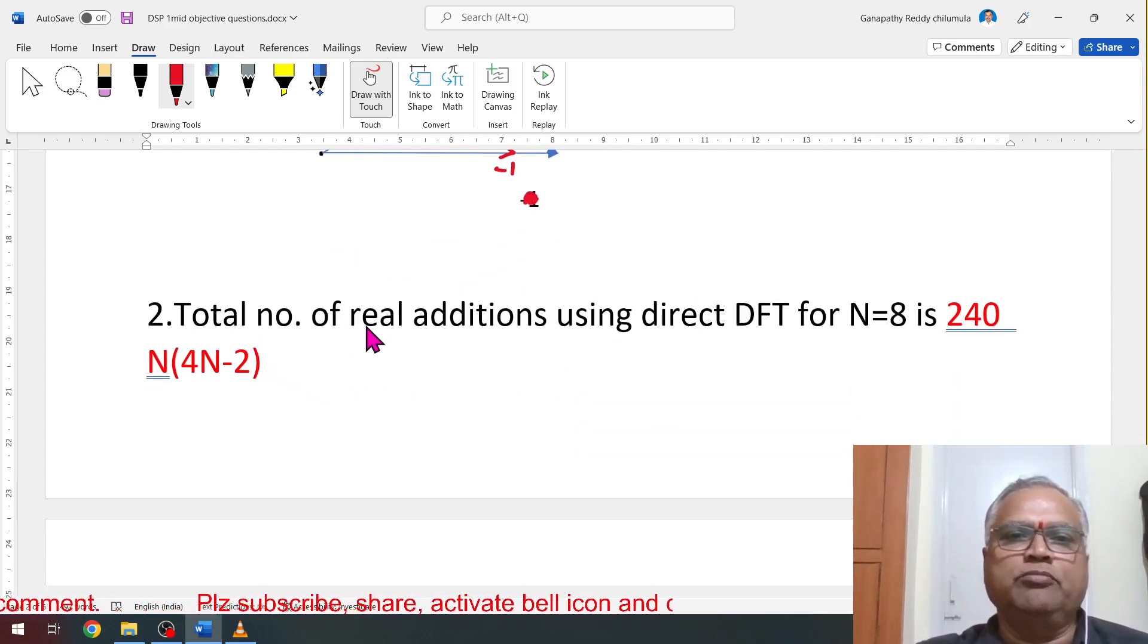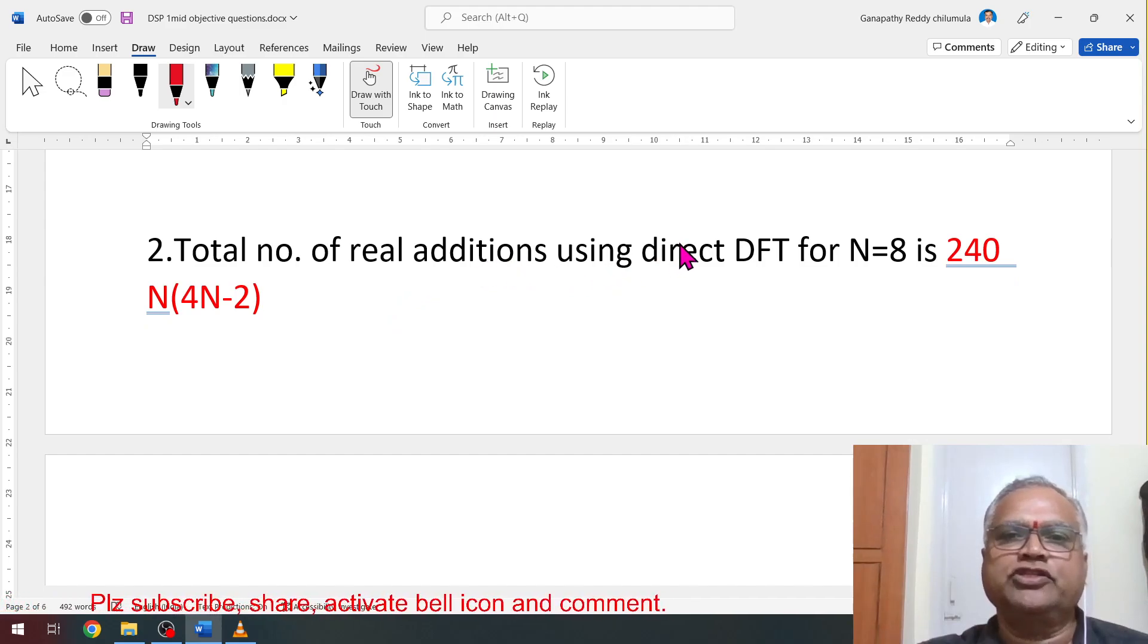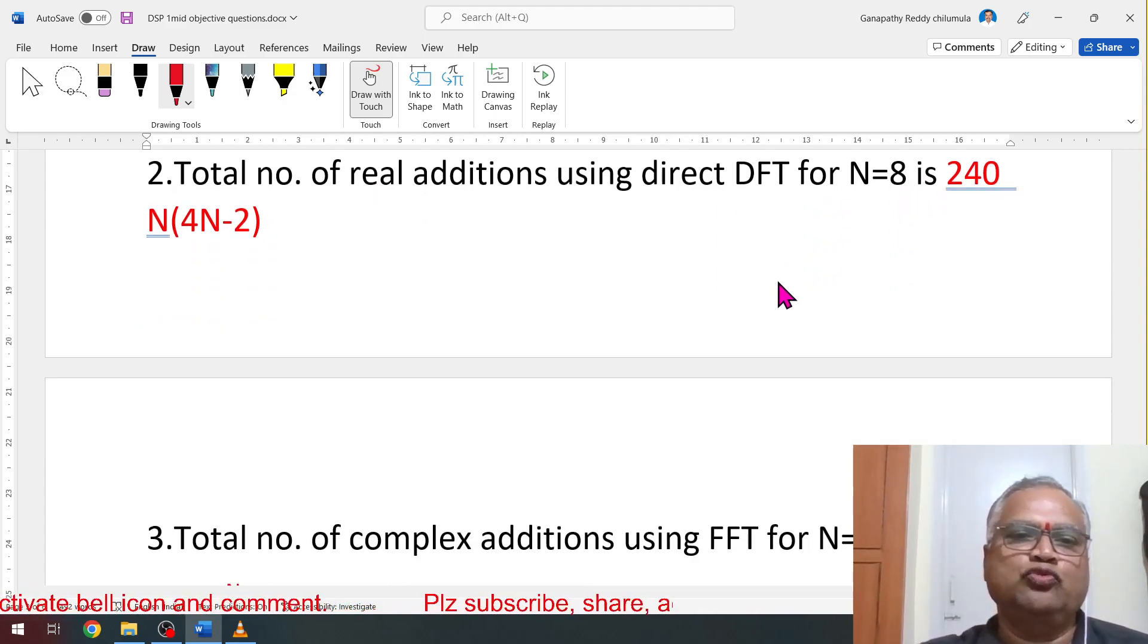Then total number of real additions using direct DFT, conventional DFT for n equal to 8. Total number of real additions: all these formulas you have to remember. The total number of real additions formula is n(4n-2). Replace n with 8, you will get 240.